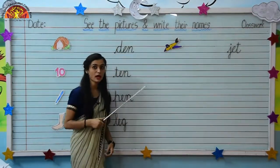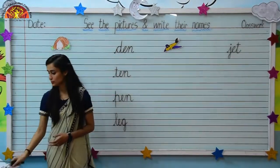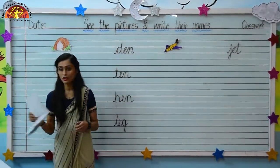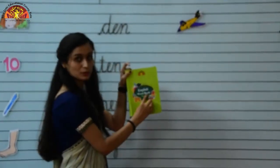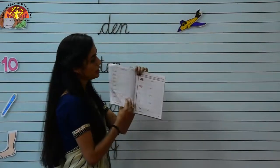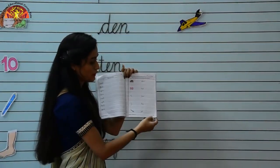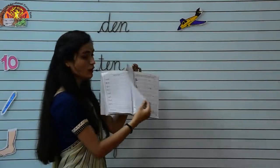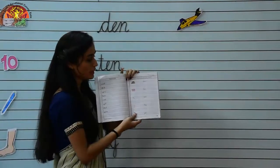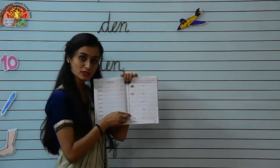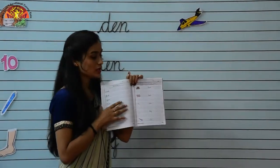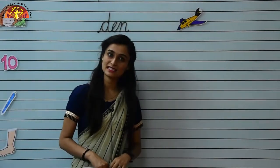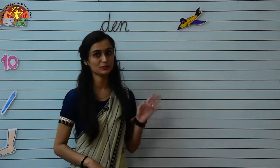So kids, this way you have to complete your exercise in your English workbook on page number 41 and 42. You have to colour the pictures also. Okay kids, have a nice day. Thank you. Bye-bye.